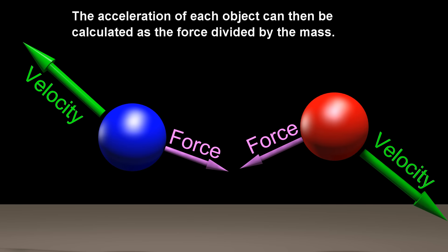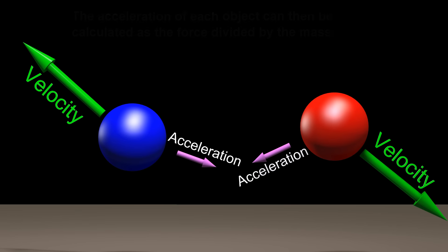The acceleration of each object can then be calculated as the force divided by the mass. The acceleration is how quickly the velocity is changing.